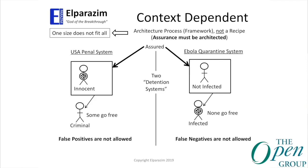Not every assurance case is the same. Consider two detention systems: the U.S. penal system and an Ebola quarantine system. In one, we're willing to let people go; in the other, we're not. Not every problem is the same, so we can't give you a recipe. What we can provide is an architectural framework so you can solve your own problem — and that's what we've attempted to do.